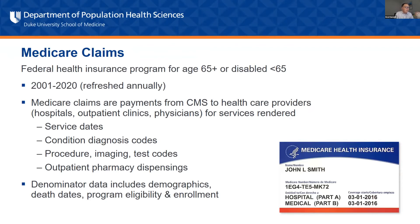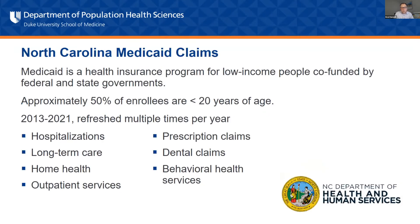We have over 20 years of Medicare data in a number of different cohorts, including a five percent sample of the U.S. population and a hundred percent of inpatient claims. Once you have claims data, you have access to service dates and all the codes that show up on those claims, as well as information on when people are eligible and enrolled in the specific program. Medicare claims is still one of our biggest core data assets.